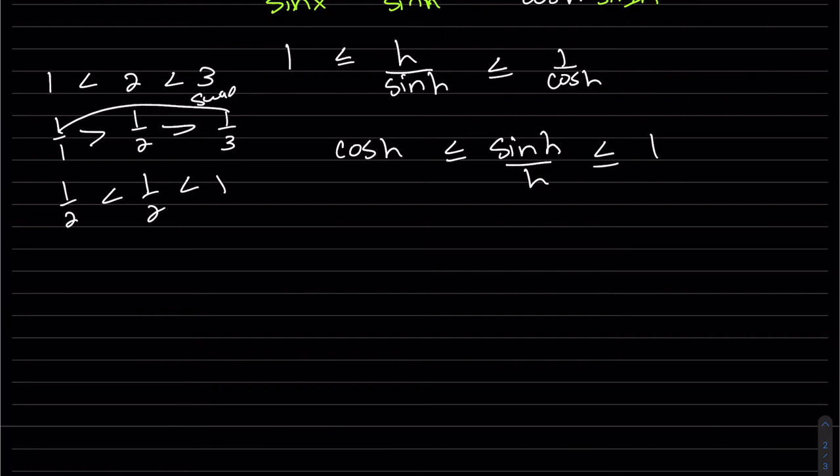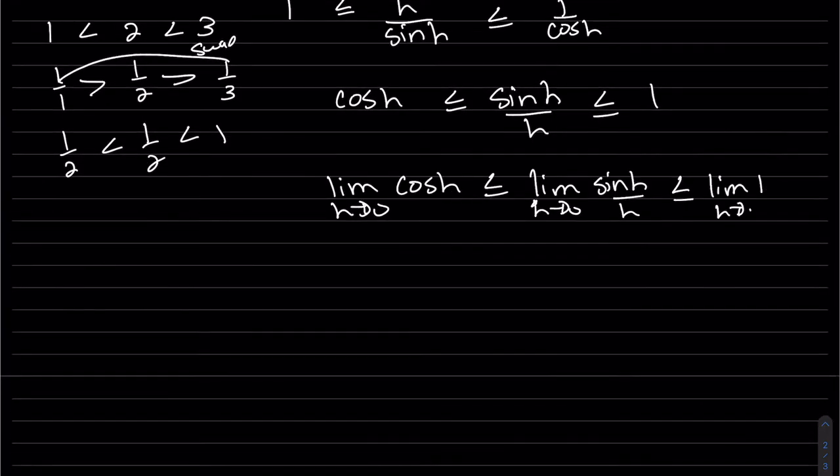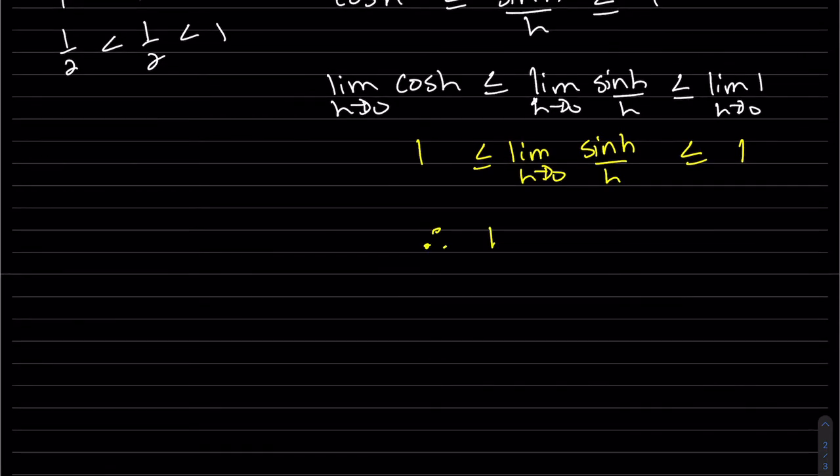And now we're ready to take the limit as h goes to zero. So remember the limit of a constant is a constant, that's one. And when you plug in h equals zero, you get the cosine of zero, you get one. So therefore, by the squeezing theorem.